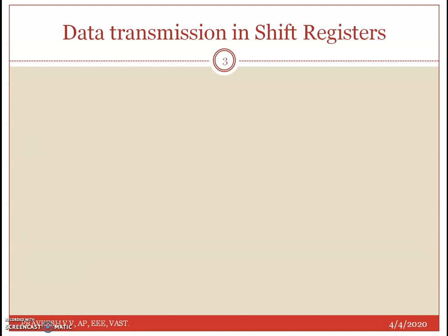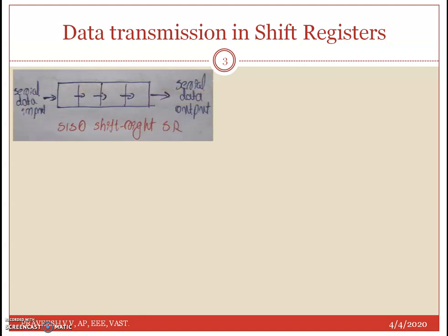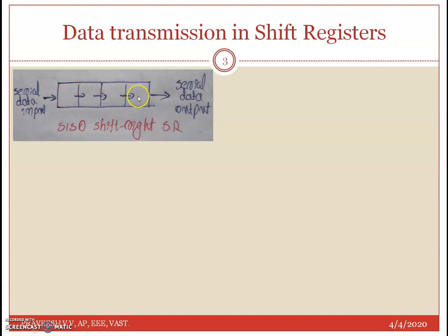The classification is based on the transmission of bits or data. The first one is SISO — Serial In Serial Out. If you consider a four-bit register with four flip-flops, the data is inputted serially, that is one after another, and it is also taken out serially — outputted one bit at a time. The data passes through flip-flop 1, 2, 3, 4, and comes out. That is serial in serial out.